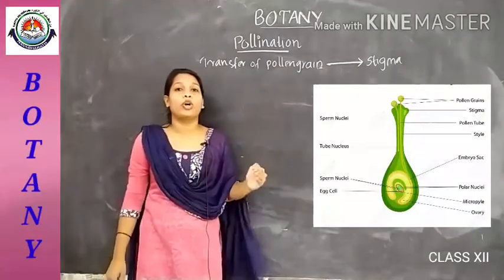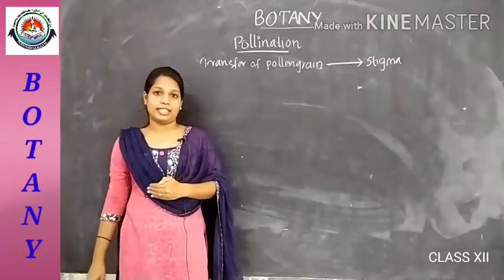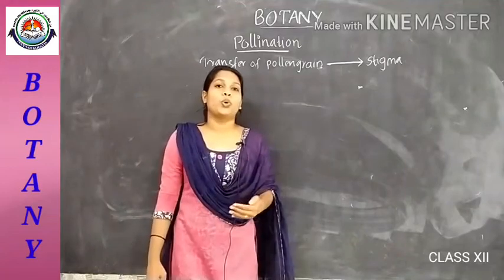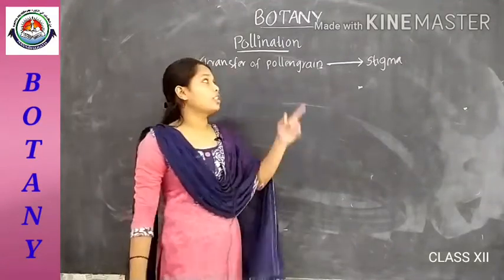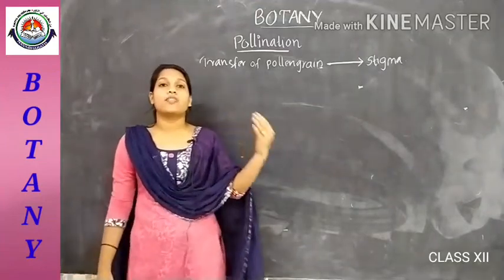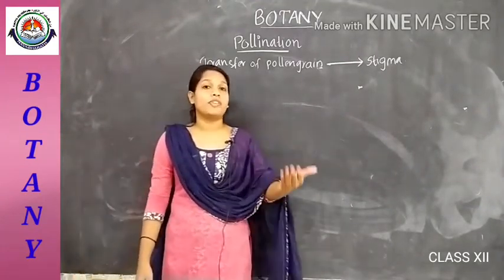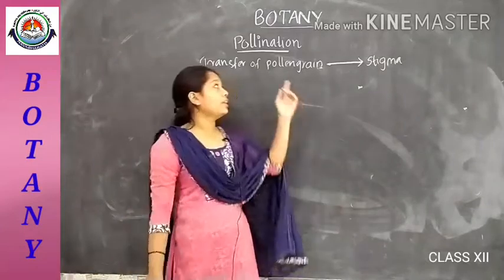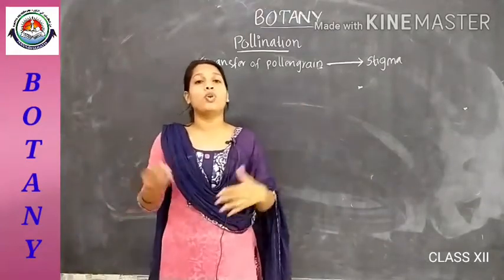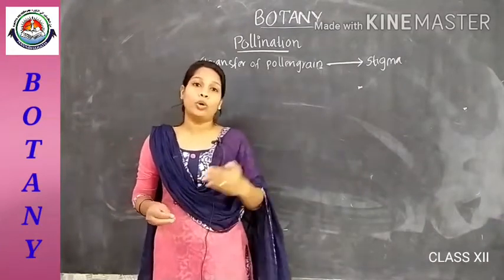Pollination is important to carry out fertilization. The flowering plants show different adaptations to perform this pollination. There are several external factors which will help to carry out pollination in a flower. Now we are going to discuss the different types of pollination.